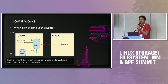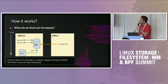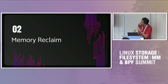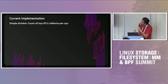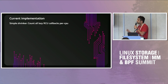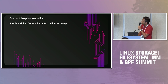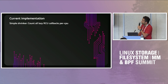So far, hopefully it's clear how lazy RCU works. Any questions? Now for the memory reclaim part. The current implementation uses a shrinker mechanism: if there's stuff in the bypass list, the shrinker detects whether the system needs memory back, and if so, flushes all the lazy callbacks.